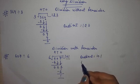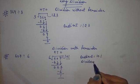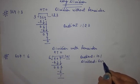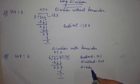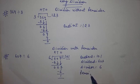So we will write quotient. Dividend is equal to 607. Divisor is equal to 6. And what is the remainder? Remainder is equals to 1.